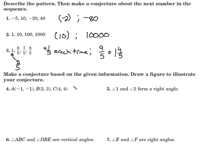For number 4, 5, 6, and 7, it says make a conjecture based on the given information. Draw a figure to illustrate your conjecture. Points A, B, and C. We should probably plot those points.